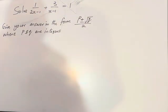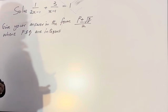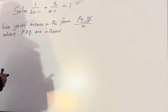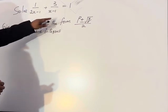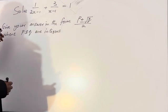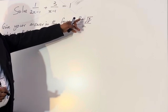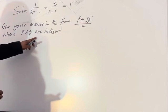Hello guys, the first one we're going to do today is this quadratic equation. Solve 1/(2x-1) + 3/(x-1) = 1 and give your answer in the form (p ± √q)/2 where p and q are integers.